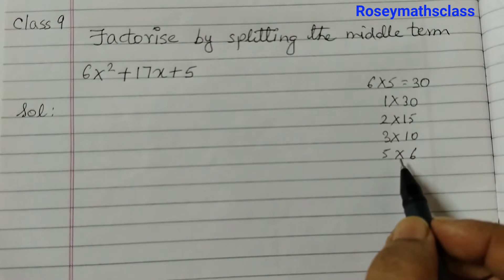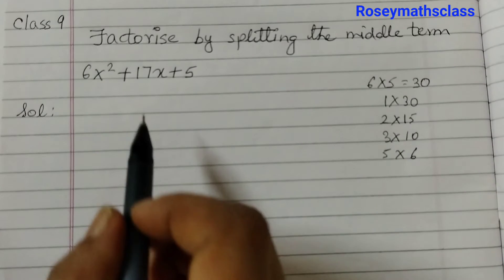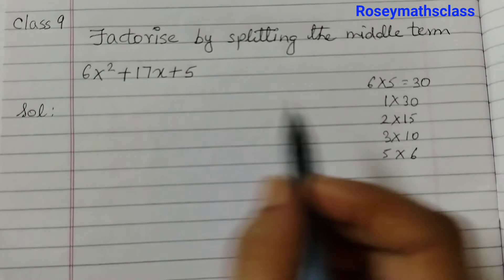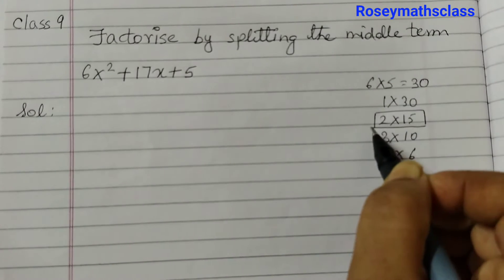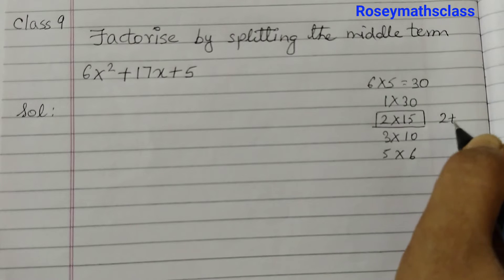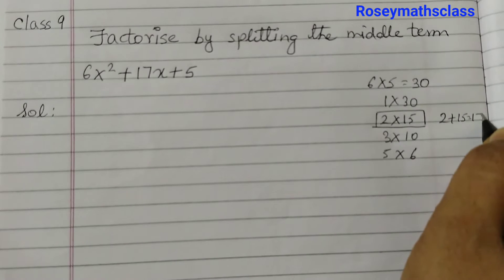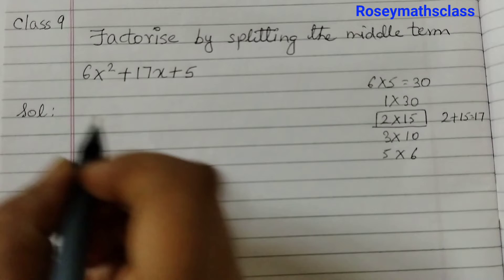Now choose any one pair which would give you 17 when added. So we see that when I take 2 and 15, 2 plus 15 is equal to 17. So we need to take this pair.